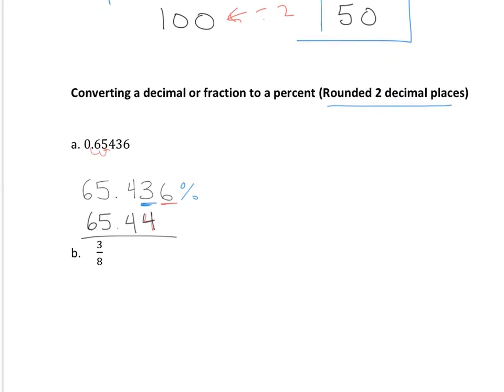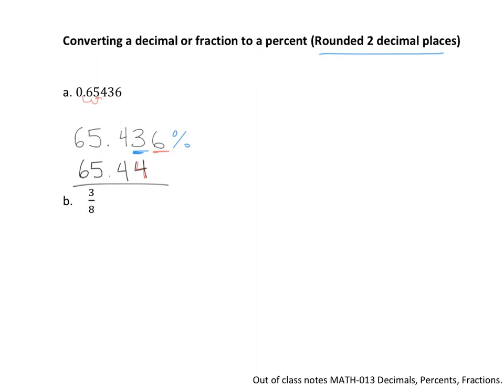Now moving down to this next one. To convert three-eighths into a percent, I think that the best way is just to go ahead and do three divided by eight in your calculator. So when I do three divided by eight in the calculator, I get 0.375. Now that's just, now this is the decimal, right?